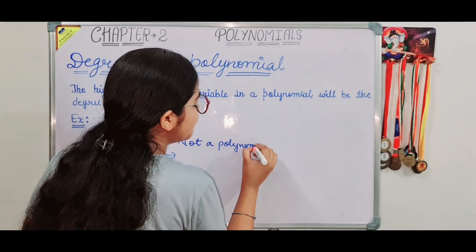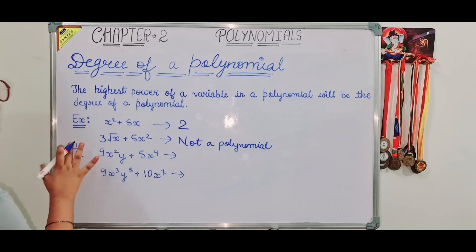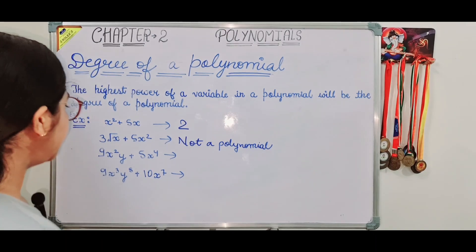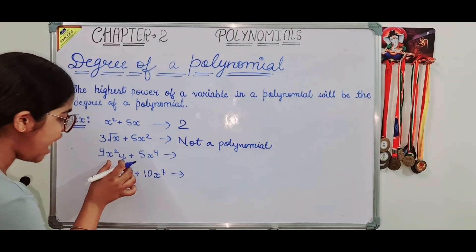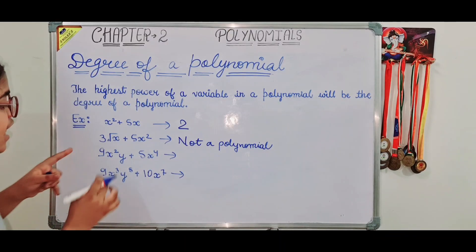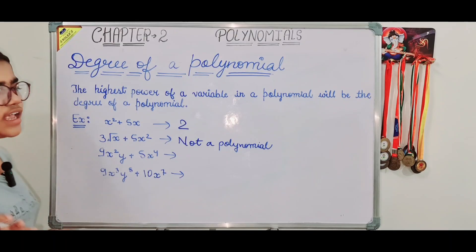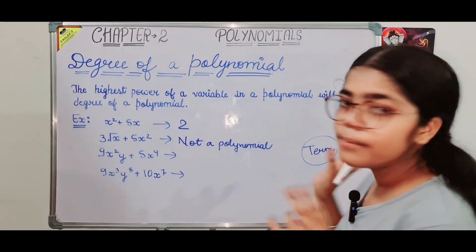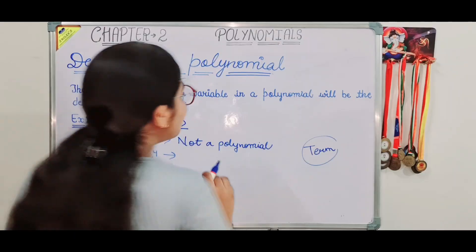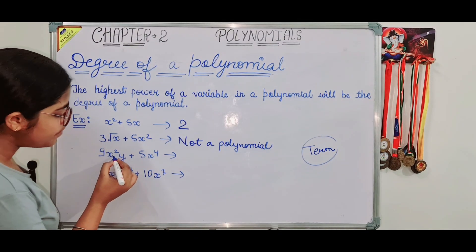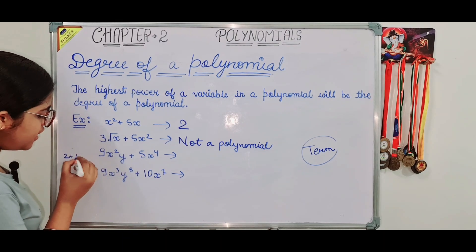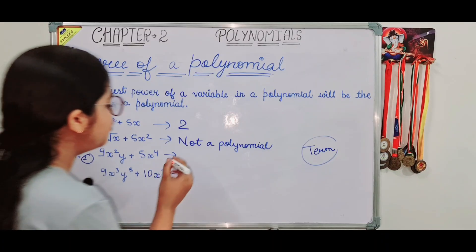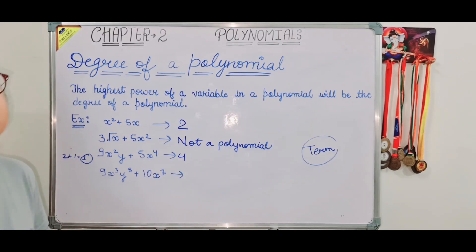Now let's look at the degree of a polynomial with two variables. Third example: 9x squared y plus 5x to the power 4. For the term 9x squared y, we add the powers: x has power 2 and y has power 1, so 2 plus 1 equals 3. For 5x to the power 4, the power is 4. The highest power is 4, so the degree of this polynomial is 4.